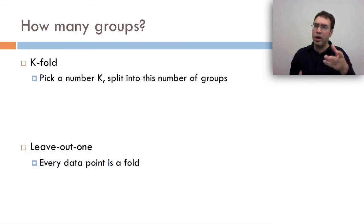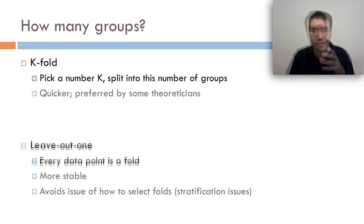How many groups do you want? We talked about this briefly earlier in the class. You could do k-fold, where you pick a number k, and you split into this number of groups. Like the case before was six-fold. Or you could do leave-out one, where every data point is its own fold, and you repeatedly train on every data point except for one, and then test on that one. Which one's better?